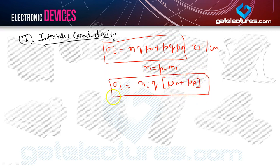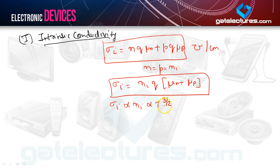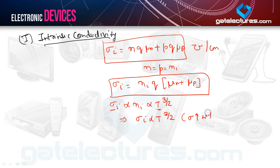This is the conductivity of the intrinsic semiconductor. σi is proportional to Ni, and Ni is proportional to T^(3/2), as we already saw in lecture 3. From here we can infer that σi is proportional to T^(3/2). So conductivity increases with temperature. For an intrinsic semiconductor, conductivity only depends on carrier concentration, not on mobility.